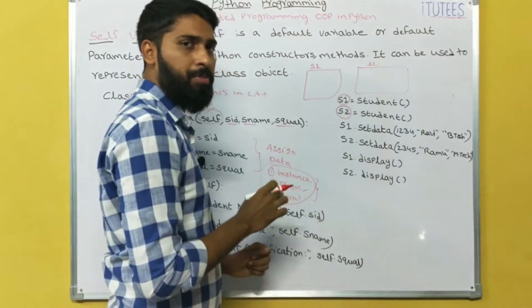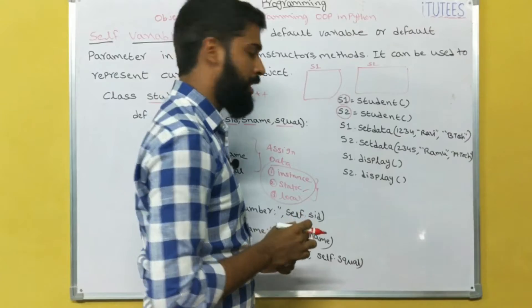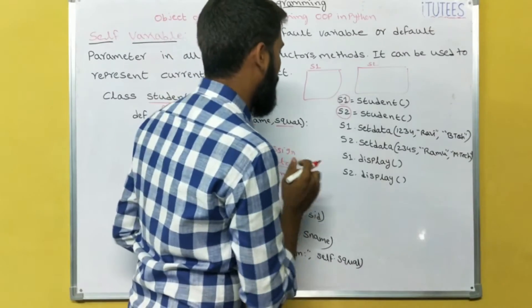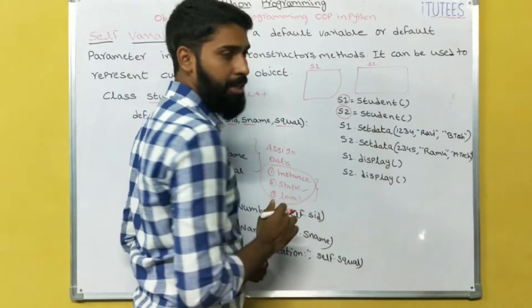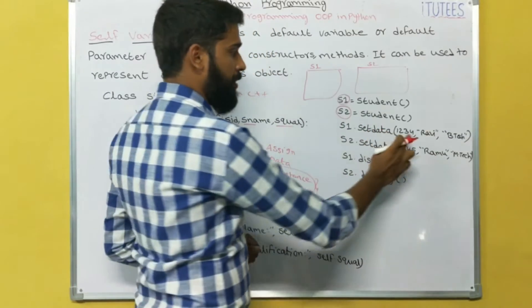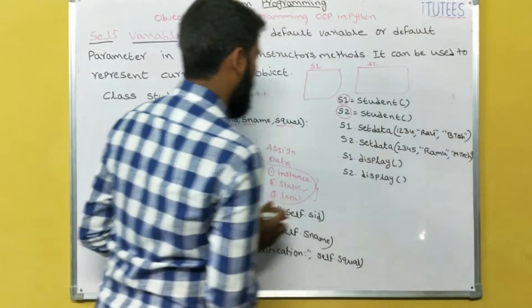What does an object mean? It is an instance of a class. We call S1.setData with arguments 1234, Ravi, Btech — that means this function setData is invoked.